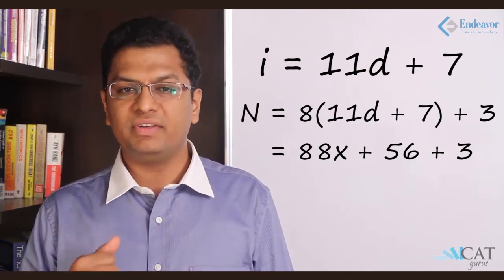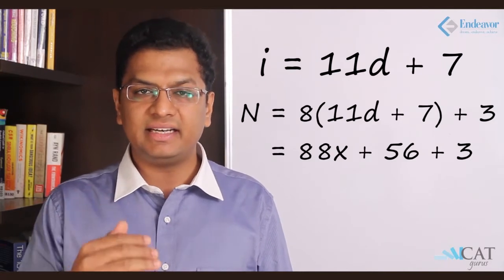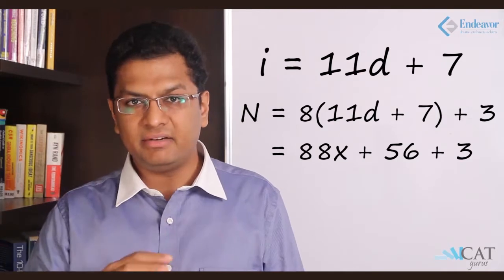If we solve it, what do we get? We get 88d plus 56 plus 3. So that is 88d plus 59. Now if we divide this number by 88 we should get our answer.